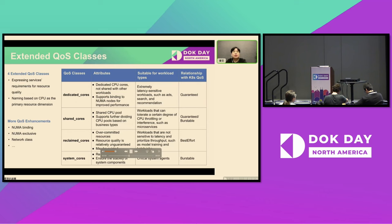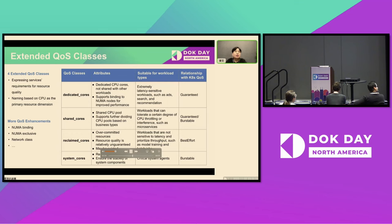If online services and data workloads are deployed on the same node, there may be mutual interference between them. Therefore, the first step we need to take is to classify different types of workloads into various QoS classes. From this table, we can see that we have defined four extended QoS classes. The first one is dedicated cores, which means it has exclusive access to some CPU cores and does not share them with other workloads. This QoS class is suitable for some extremely intensive workloads, such as ads, search, and recommendation services.